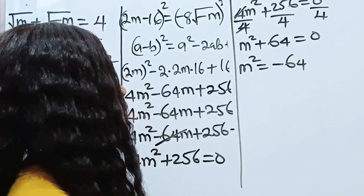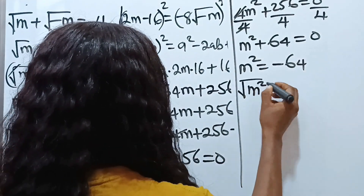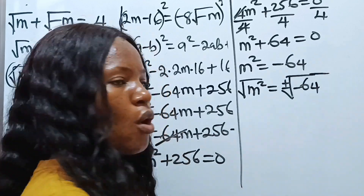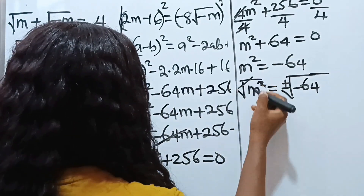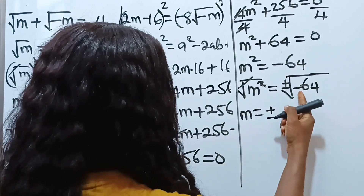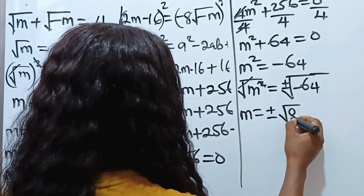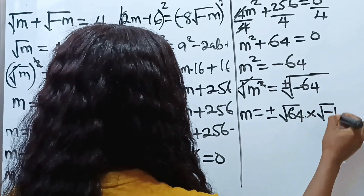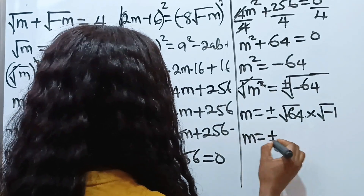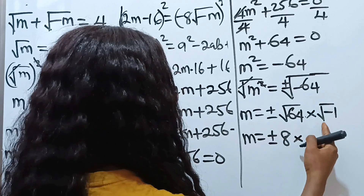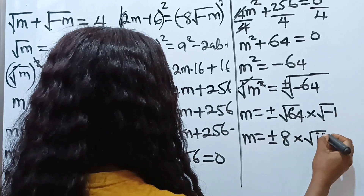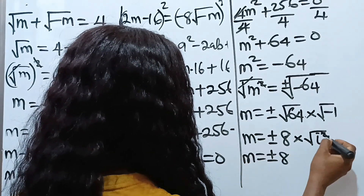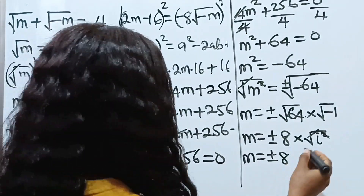To get the value of m we take the square root of both sides of the equation. Square root of m squared is equal to square root of negative 64. The square root cancels the square on the left, giving m equals plus or minus square root of negative 64, which equals plus or minus 8i.